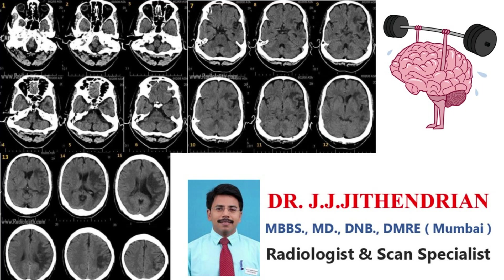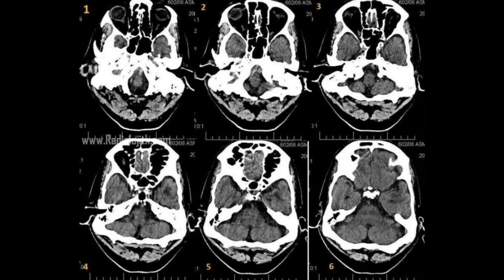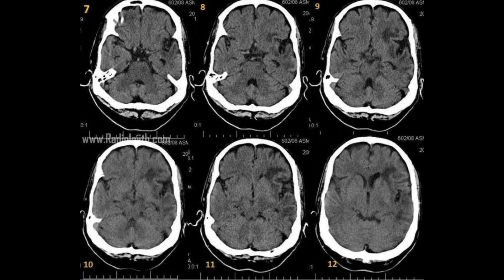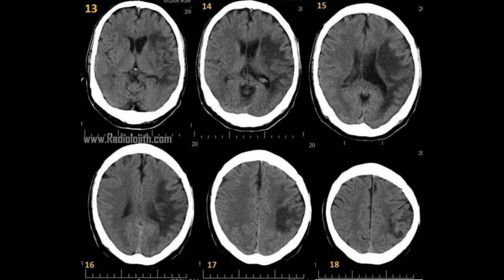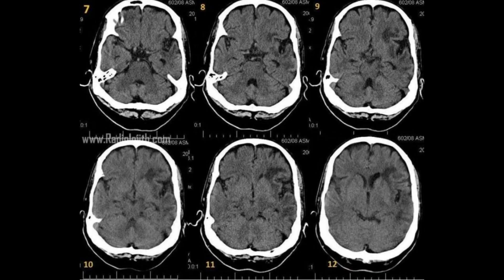Here are actual CT scan brain images of a 64-year-old man — his history is withheld. Please go through the images, think about the findings and possible differential diagnosis, and then arrive at the final diagnosis. The CT findings are commonly seen each and every day by most radiologists and neurologists. The images are enough for the diagnosis. If you want more time, please pause the video and go back to see the images again.